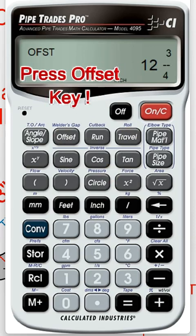So it's good to know the 0.707, but it's also good to know how to use the Pipe Trades Pro calculator.